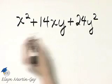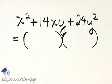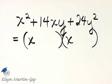Since it is a three-term trinomial, we'll see if it factors into a binomial times a binomial. For x squared, we'll use x and x because x times x is x squared.